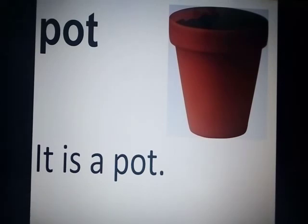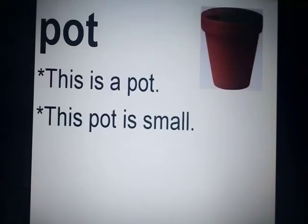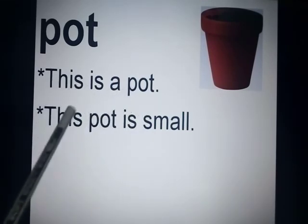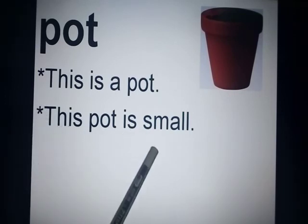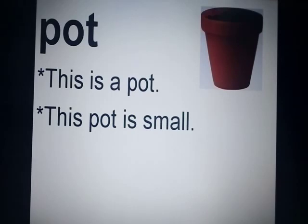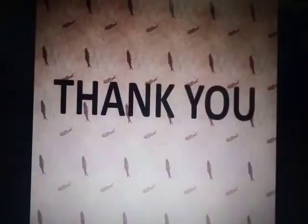Now make some more sentences of the word pot. The first sentence is: this is a pot — yeh ek gamla hai. And the second sentence is: this pot is small — yeh gamla chota hai. Small means chota. With this our topic comes to an end. You have to read this page five times. You now know where to use 'a' and where to use 'an' — don't forget this concept. Thank you. Allah hafiz.